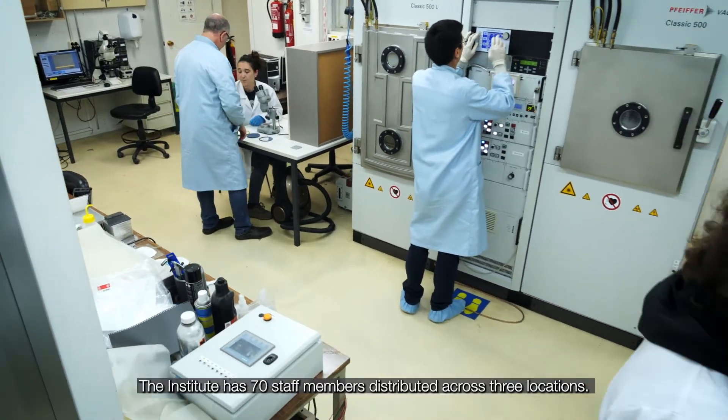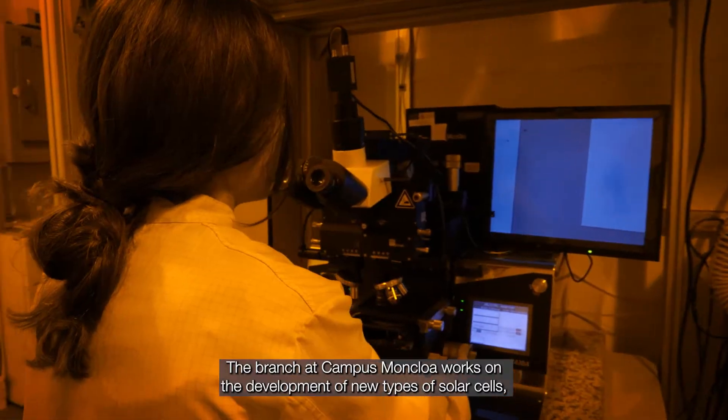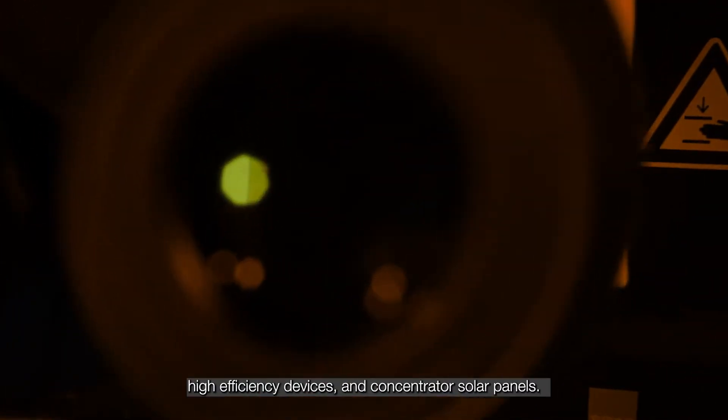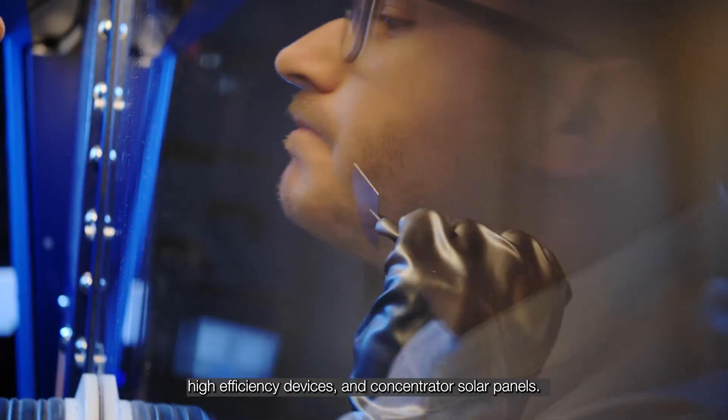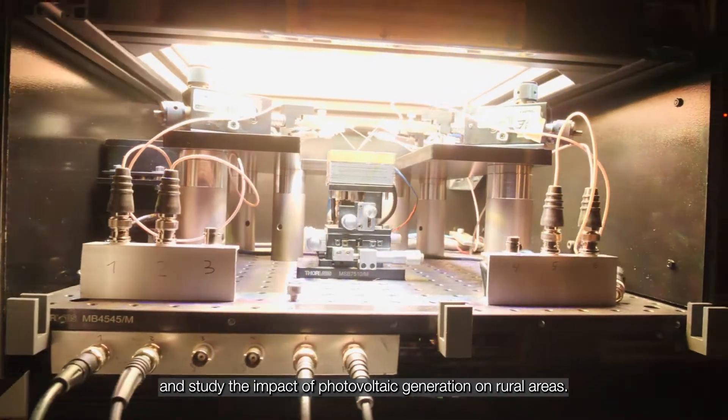The Institute has 70 staff members distributed across three locations. The branch at Campus Moncloa works on the development of new types of solar cells, high-efficiency devices, and concentrator solar panels. They also research energy distribution and study the impact of photovoltaic generation on rural areas.